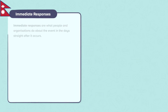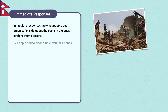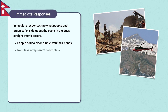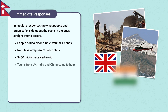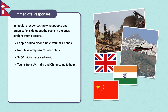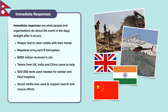Immediate responses are what people and organisations do about the event in the days straight after it occurs. In the Gorkha earthquake, this included people who had to clear rubble with their hands in the first 24 hours due to a lack of government help. The Nepalese army sent nine helicopters to rescue people, which meant many people in remote villages couldn't be rescued. $450 million was received in aid from across the world. Teams from the UK, India and China came to help and support the Nepalese army alongside a number of other countries. 500,000 tents were needed for shelter and for field hospitals to be set up. Social media was used to support search and rescue efforts.